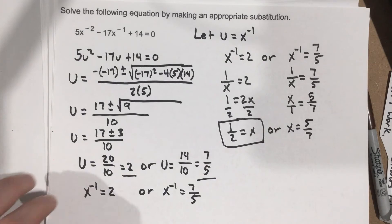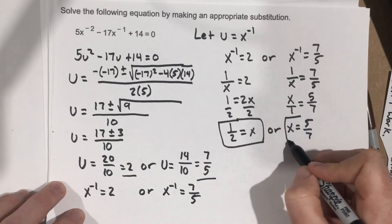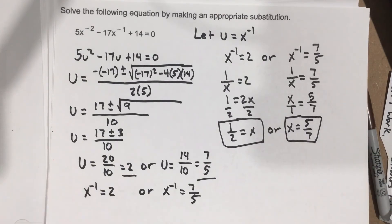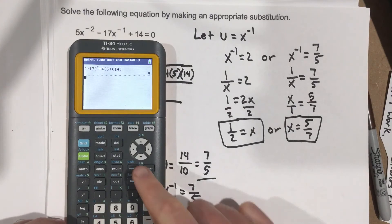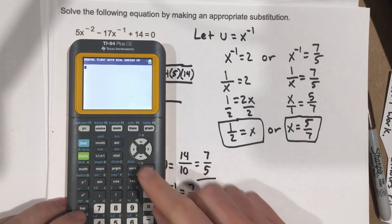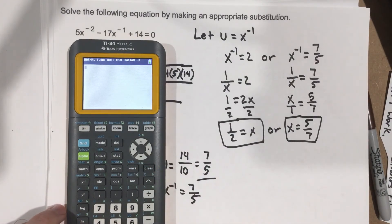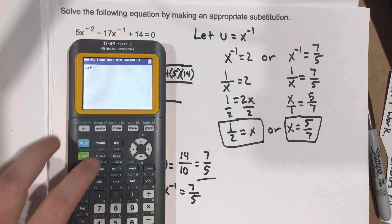Now what we need to do is we probably need to try to check the answers to this. So let's go ahead and do that. And we can do that in our calculator pretty easily. So we're going to do 1 half, so 0.5, store it as x.